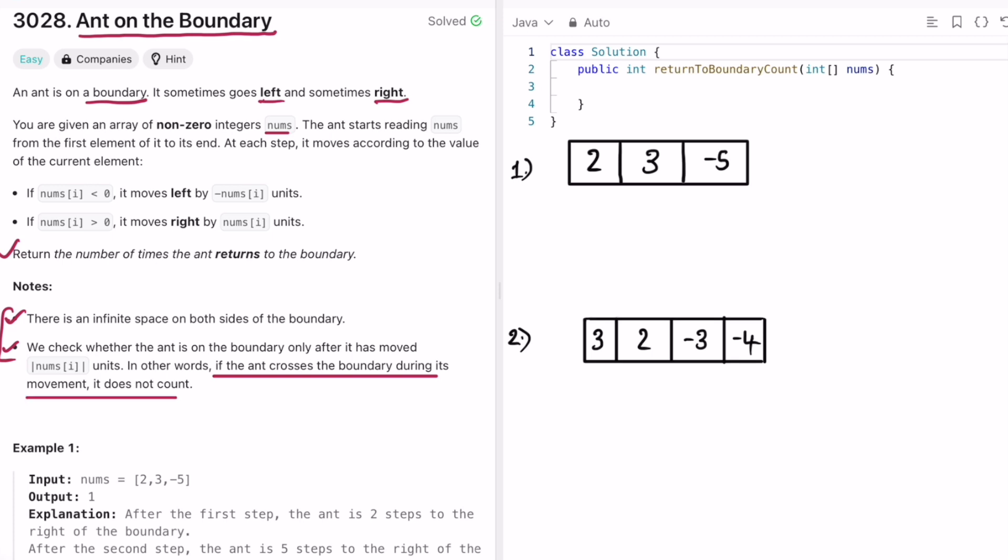So let us depict the first example on a number line. So boundary here means we are at zero. This is the boundary and we start iterating from left to right. So first we take the first element. It goes two steps to the right because this is two. So it goes two steps to the right and it is at two now.